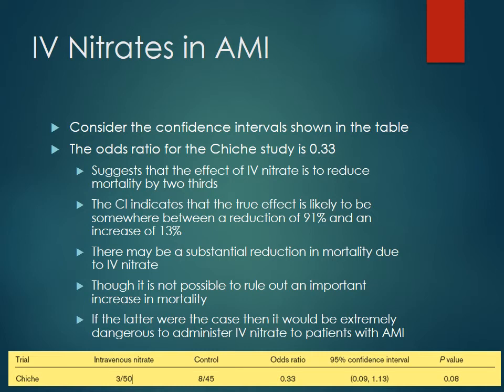Looking at the confidence intervals, very wide confidence intervals make it more difficult to achieve significance and also have clinical implications. For example, looking at the Cheech trial with an odds ratio of 0.33, that would suggest IV nitrates would reduce mortality by about two thirds. However, looking at the ranges of the 95% confidence interval — where 95% of the true value should reside — it could be anywhere between a 91% reduction in mortality or an increase of 13% in mortality. You could have a very substantial reduction, but you could also have an increase. You can't really take anything away from those results because they're not statistically significant, and clinically you don't want to give something that may increase mortality for your patients.